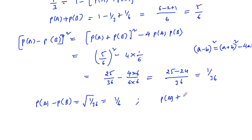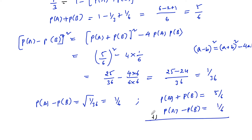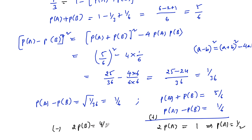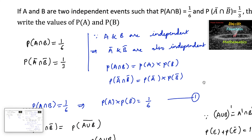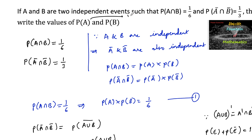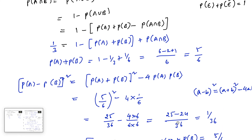Now solving: P(A) + P(B) = 5/6 and P(A) − P(B) = 1/6. Adding both equations: 2·P(A) = 6/6 = 1, so P(A) = 1/2. Subtracting the equations: 2·P(B) = 5/6 − 1/6 = 4/6, so P(B) = 2/6 = 1/3. Therefore, probability of event A is 1/2 and probability of event B is 1/3.